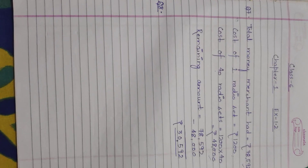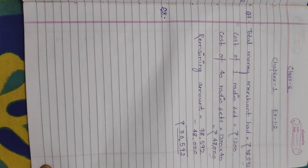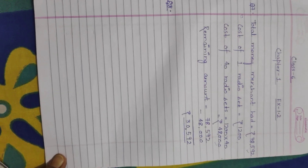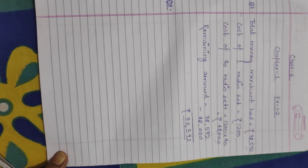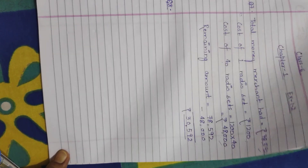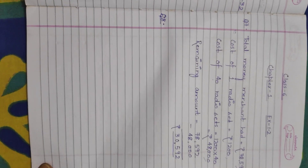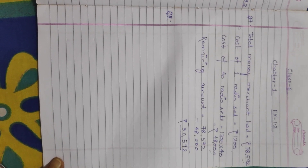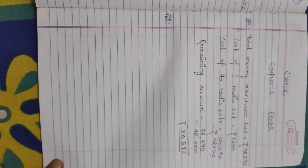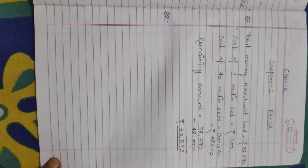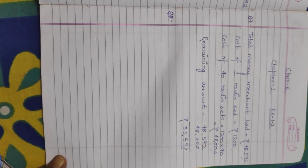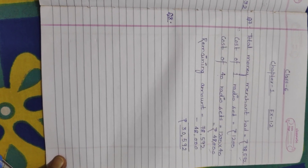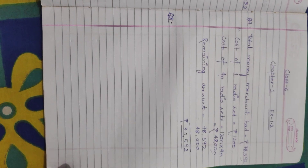Now let's come to question number 8. A student multiplied 7,236 by 65 instead of multiplying by 56. By how much was his answer greater than the correct answer? The student had to multiply 7,236 with 56, but by mistake he multiplied it with 65. We have to calculate the difference between the wrong answer and the correct answer.